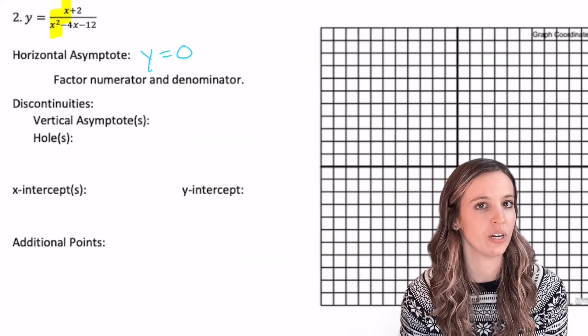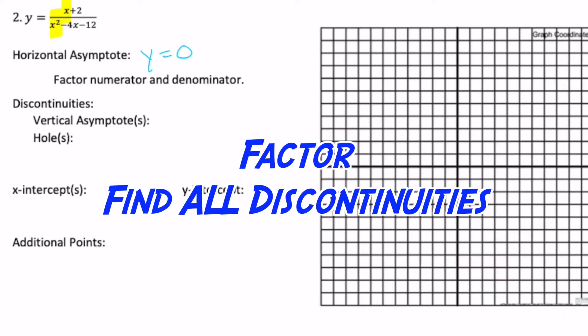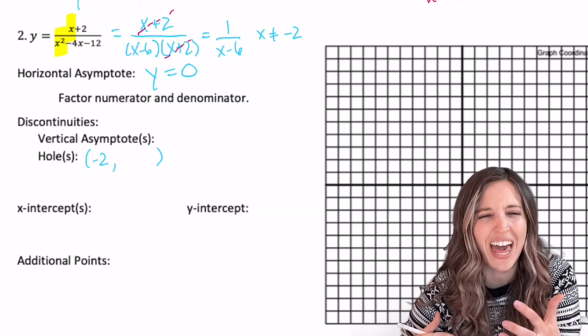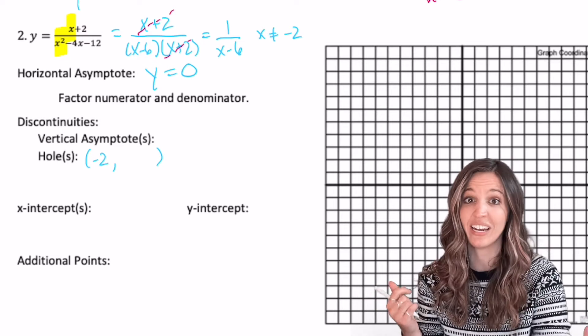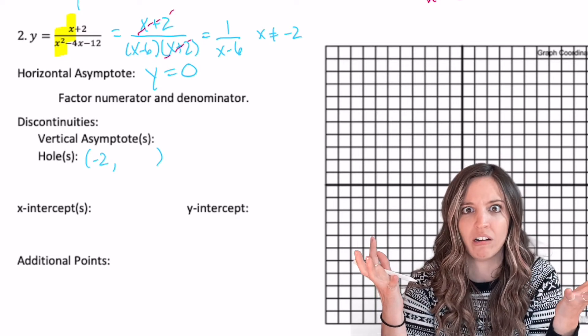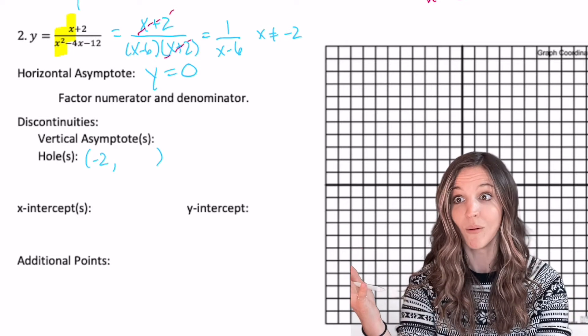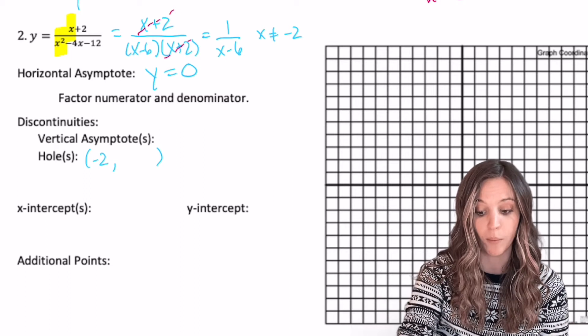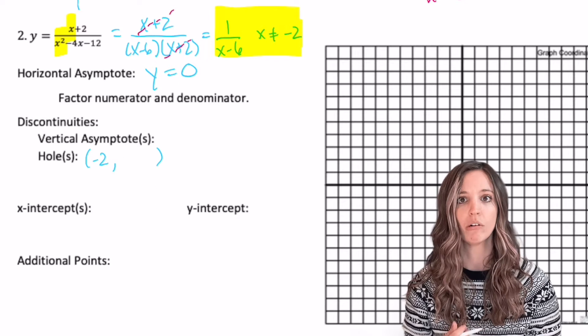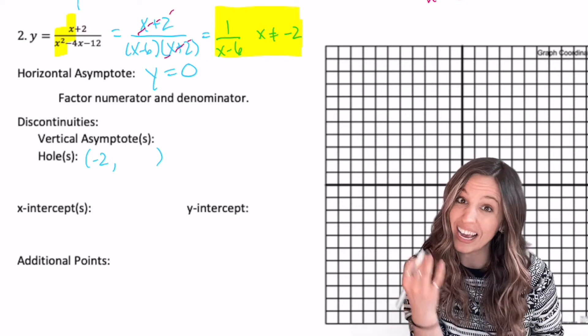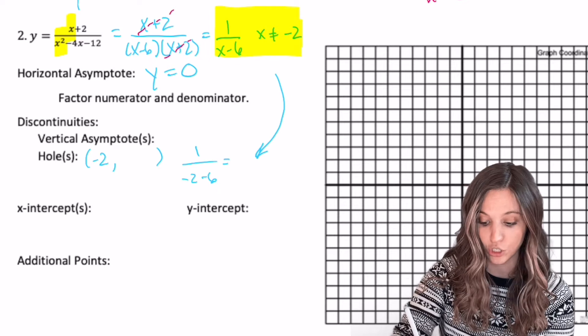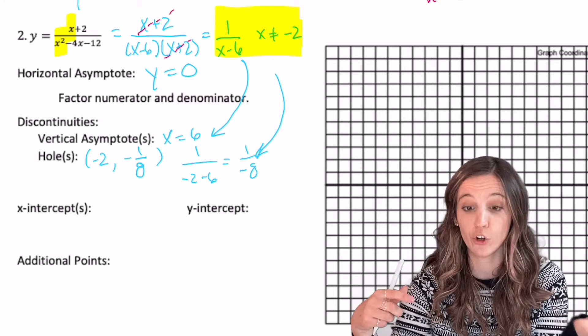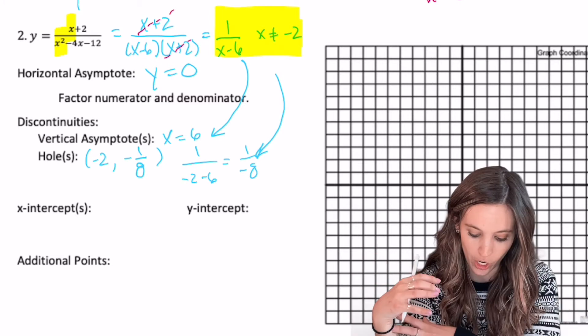Now let's go find the discontinuities. How do we do that? Factor. Whoa, what happened here? I was able to remove that x plus two, which creates a hole at negative two. But what happens to my numerator? Did it just go away? No. It equals one. It equals one. So one divided by x minus six is my simplified form where x cannot equal negative two. So when I'm going to go find the exact location of the hole, I'm going to plug in negative two to one divided by x minus six. So we have a hole at negative two, negative one eighth. And then that leaves us with a vertical asymptote at x equals six because of that denominator.